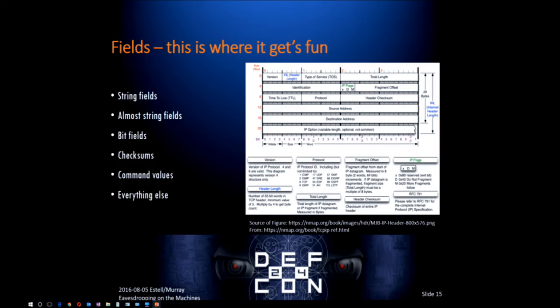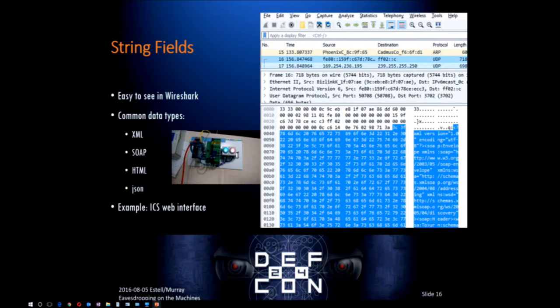The next step is looking at fields - this is where it really gets fun. You'll be looking at the fields of the packet itself. There are lots of different types of fields. Start with string fields: Wireshark provides ASCII output of the packet in the right-hand column, which may or may not be readable. You capture some packets, open it up in Wireshark, find those packets, look at them. You can immediately see - in this case this is SOAP protocol, lots of XML-like data, lots of strings you can look at, and you can start to understand what that is. This is from the ICS village last year.